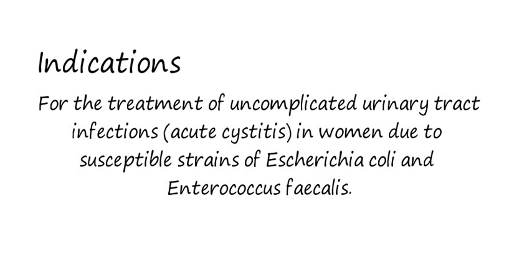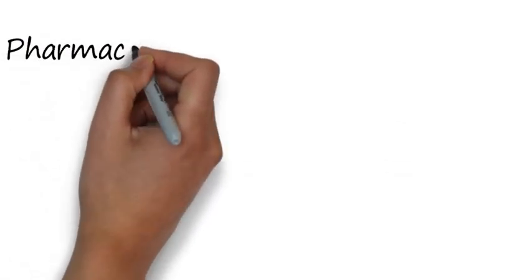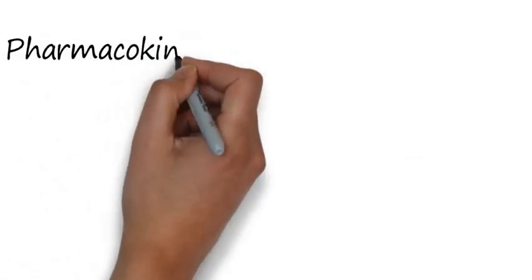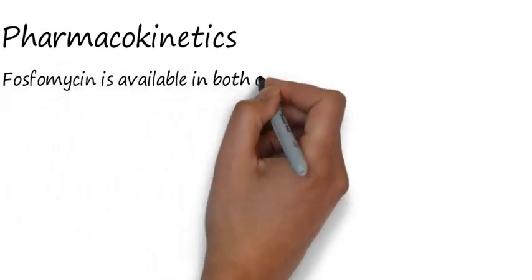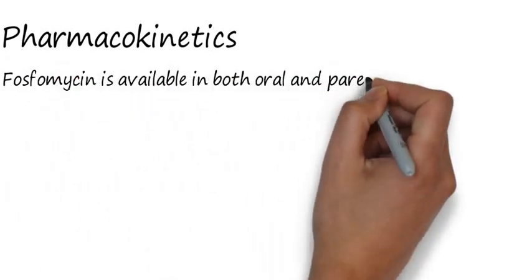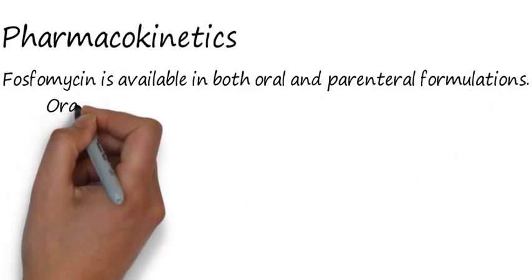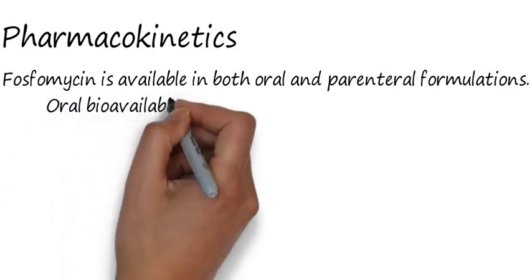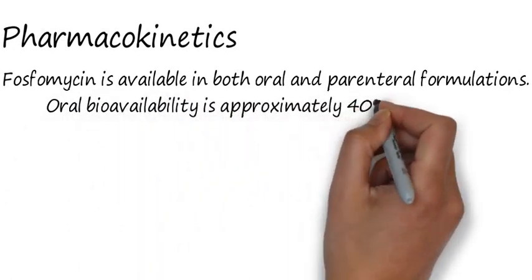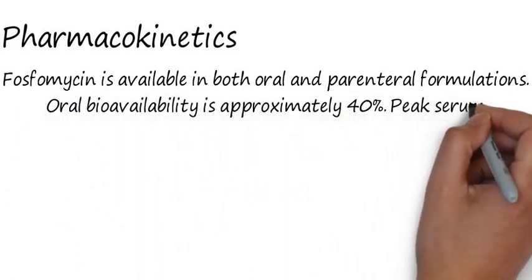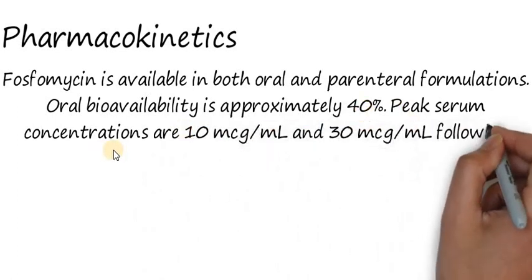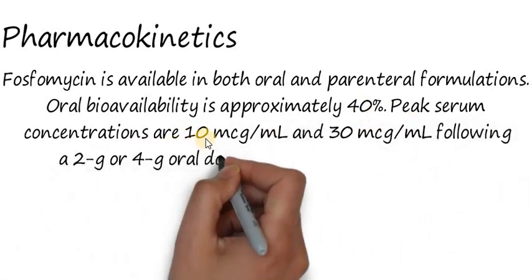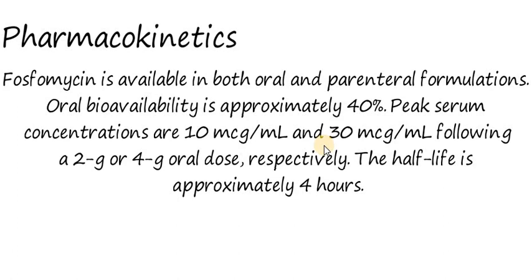Then we have pharmacokinetics, which you have to remember. Oral bioavailability is approximately 40%. Peak plasma concentrations are 10 micrograms per mL for a 2-gram dose and 30 micrograms per mL for a 4-gram oral dose of Phosphomycin.